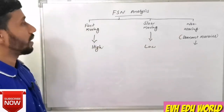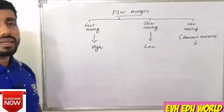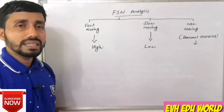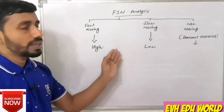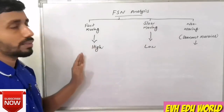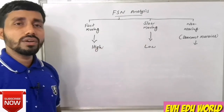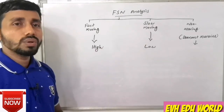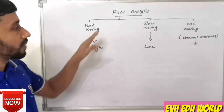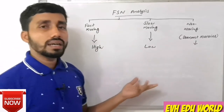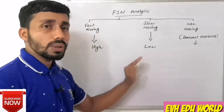FSN analysis is based on the movement of materials. There are three categories: fast-moving material, with regular movement and a high material turnover ratio; slow-moving material, where movement is slow and the material turnover ratio is low.